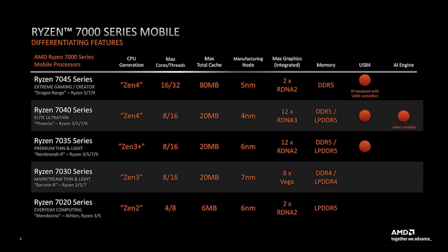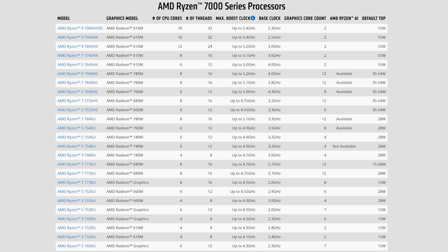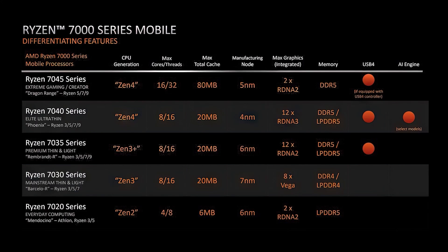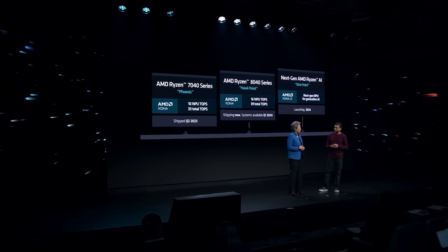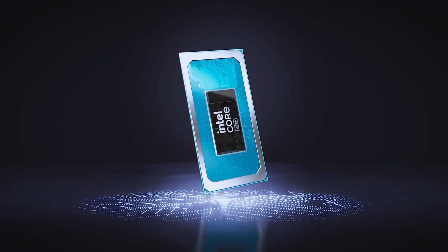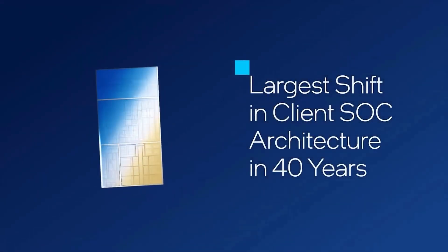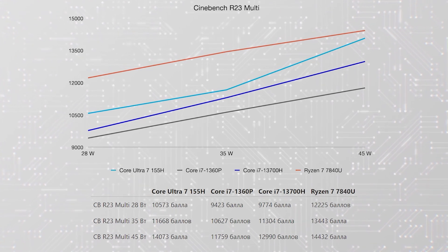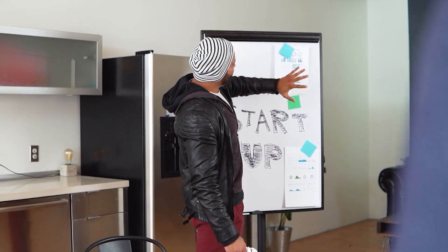Why do some manufacturers use clear names while others go out of their way to confuse us? Probably they have something to hide. AMD didn't redesign Ryzen 7000 naming for no reason — half of the chips were based not on Zen 4 but on older Zen 3 and even Zen 2. Buyers who ignore the last two digits easily fall for this: the Ryzen 7020 and 7040 look similar but have a two-generation gap between them. Intel is quite similar — Meteor Lake processors are not much faster than previous-gen chips.